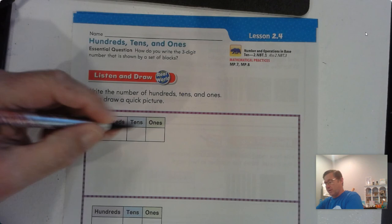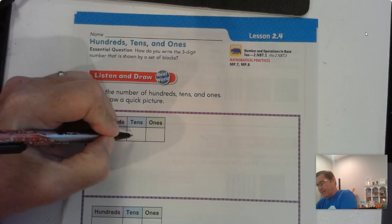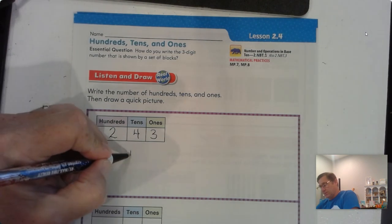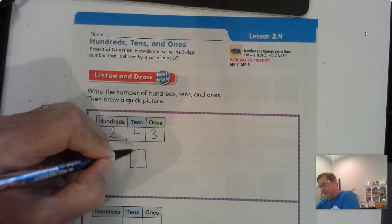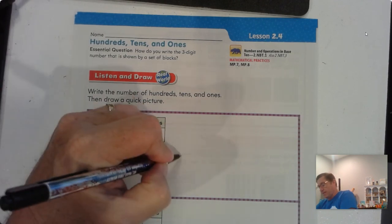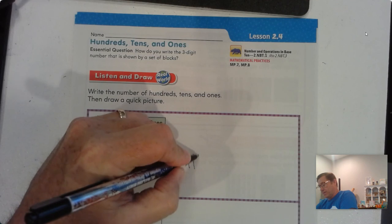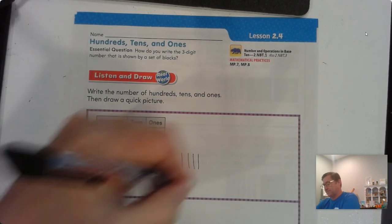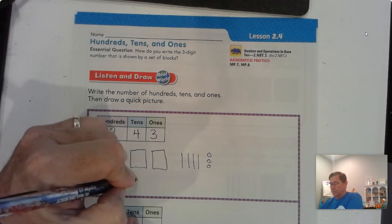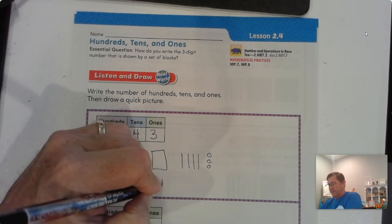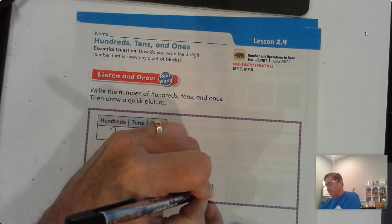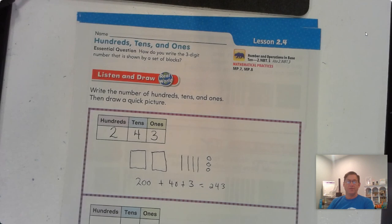All right. 243. So we should have drawn 200 blocks, four tens, and three ones. 200 plus 40 plus three is 243.